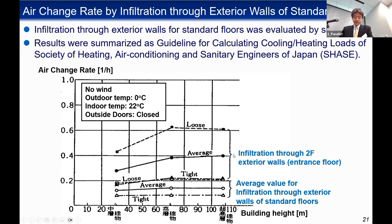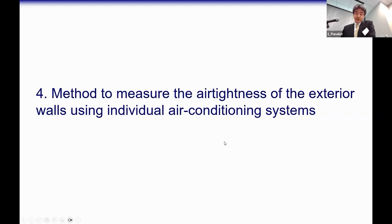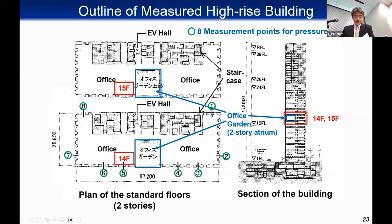The second floor is an entrance floor, so the infiltration rate through the second-floor exterior wall is higher than that for standard floors. These results were summarized in the guideline for calculating cooling and heating loads of the Society of Heating, Air Conditioning and Sanitary Engineers of Japan (SHASE). Next, I'd like to talk about the method to measure the air tightness of exterior walls using an individual air conditioning system. We developed a method to measure air tightness on a reference floor using individual air conditioning systems for each floor, which began to be widely used in the 2000s.